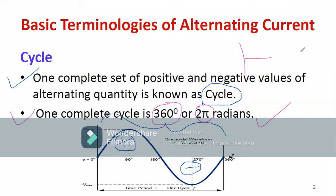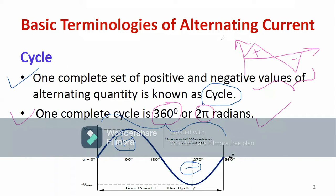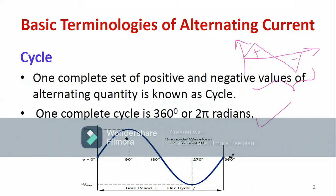Another waveform also represents a complete cycle. This is also a sinusoidal waveform, and if it's a triangular waveform you can still identify the cycle as the complete set of positive and negative half cycles. The combined positive and negative half cycle is called one full cycle or one complete cycle. It can be expressed either in degrees or radians — 360 degrees or 2π radians.